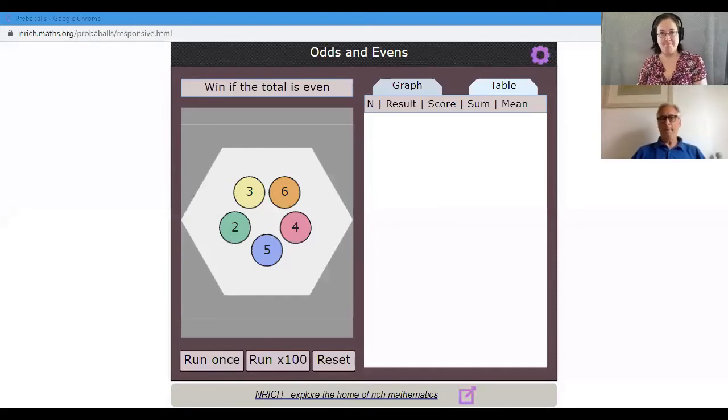Hi Charlie, hi Alison. I'd like to share a game with you if that's okay. I want you to imagine that those five circles are five counters in a bag. There's a two, a three, a four, a five, and a six. I want you to imagine putting your hand into the bag and just pulling out two of the counters at a time.